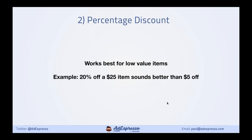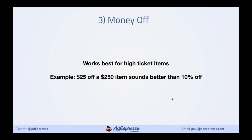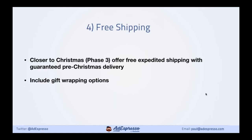For percentage discounts, different studies tell you different things. My take-home message is: use percentage discounts if it's a small value item — 20% off a $25 item sounds better than 'here's $5 off.' For money off coupons, it works well with high-ticket items — '$25 off' sounds better when it's a $250 item rather than 'here's 10%.'